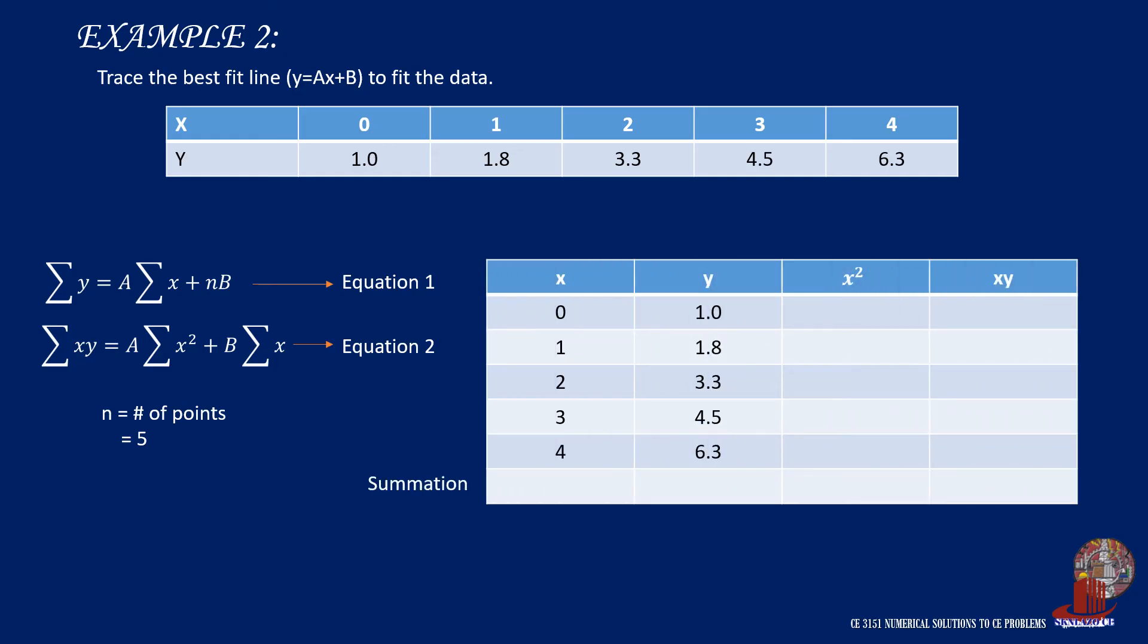Now complete the table with the first two columns of x and y. Add a column for x squared and fill the column. Lastly, place a column for x times y and identify the summation of each column.